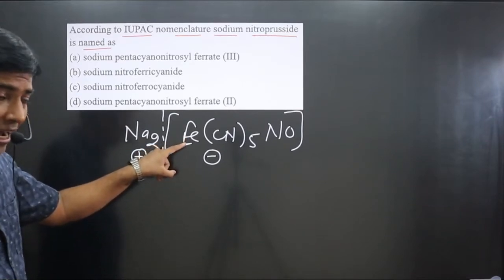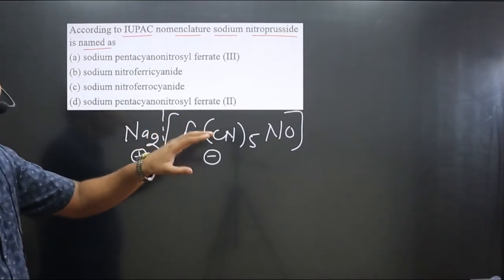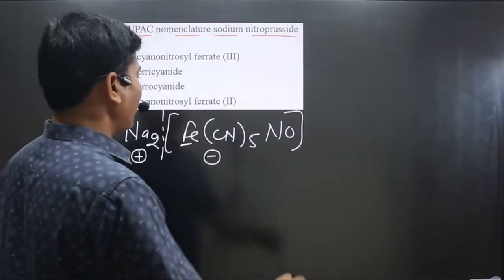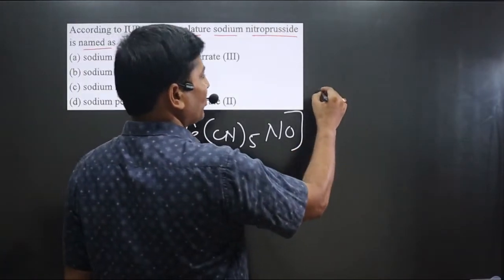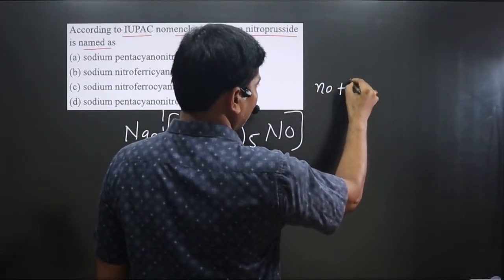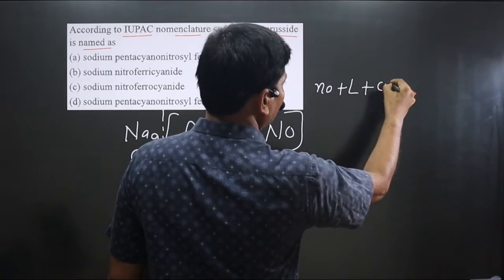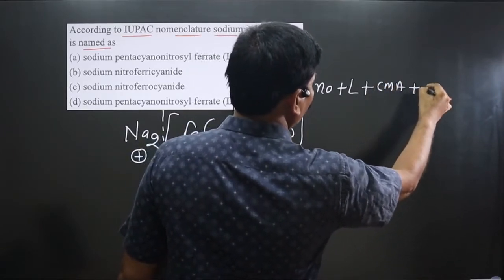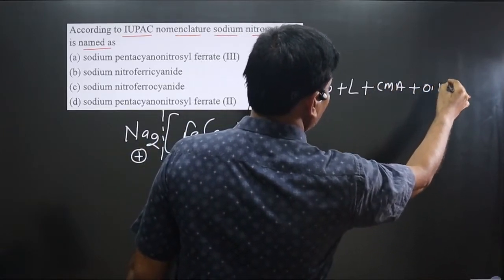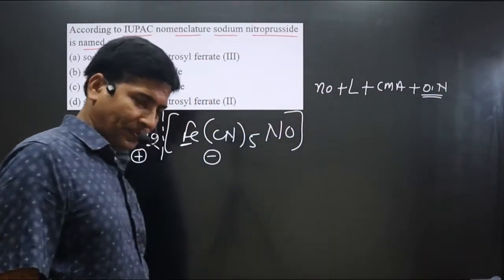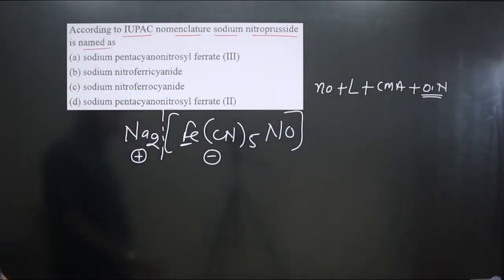Since the central element is in the anionic part, we use its special name — iron becomes ferrate. The order for naming the complex is: first, the number of ligands; then the type of ligands; then the central metal atom; and finally the oxidation number of the central metal atom in Roman numerals.